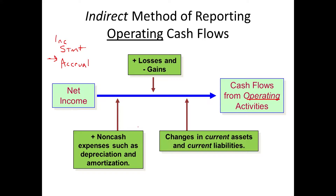What we are going to do is three things to that number. We are going to transform that number from a net income based on the accrual basis to, in a way, net income if we would have used the cash basis of accounting. We're going to start with net income from the income statement prepared using the accrual basis, apply three sets of changes, and turn it into a number that basically represents net income under the cash basis.